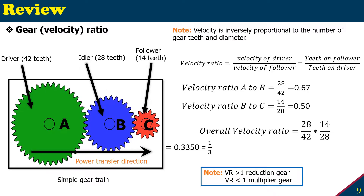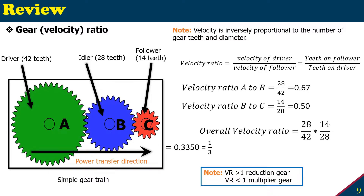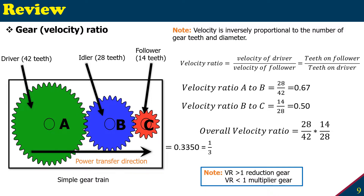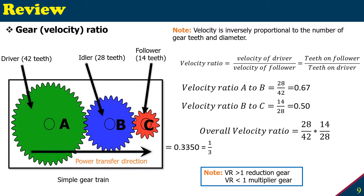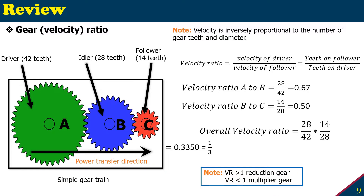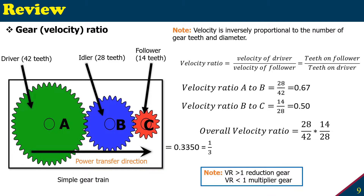For the next stage, the velocity ratio from B to C, or blue to red, is the teeth on the follower which is 14, over the teeth on the driver which is 28, giving 0.5. So the overall velocity ratio from A to C is 0.67 multiplied by 0.5, which gives 0.335 — exactly 1 over 3. We found the teeth ratio of 3 previously, and now the velocity ratio is 1 over 3, confirming the inverse proportionality.